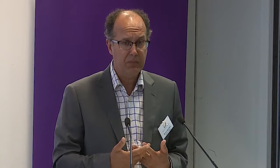Why? Where do we come from? Universal ID's main goal is to facilitate the development of interoperable ambient assisted living applications. What is needed is interoperability because we have a set of different types of applications to meet the requirements of users. We have independent living, healthcare, occupation in life, recreation — these are the main domains, and there are a lot of applications behind.